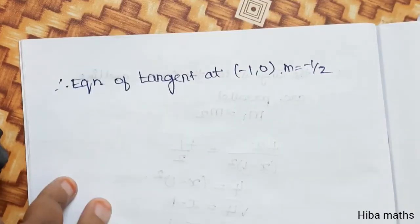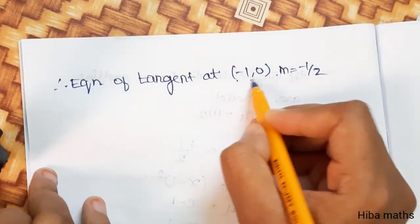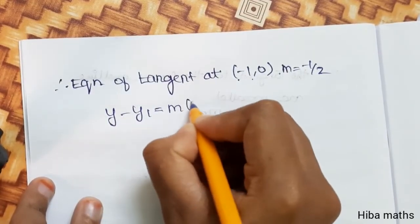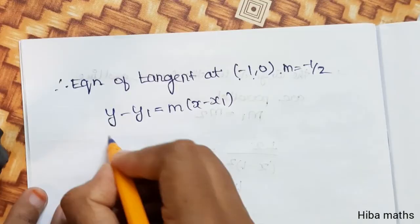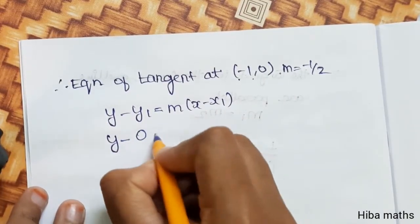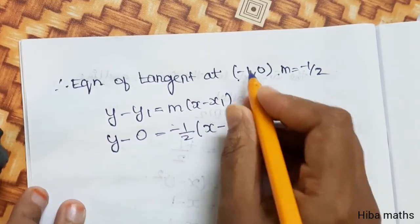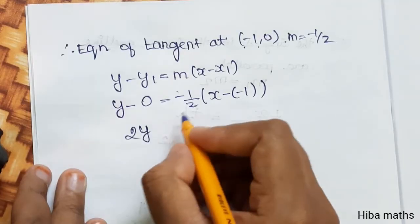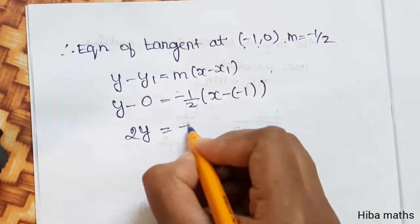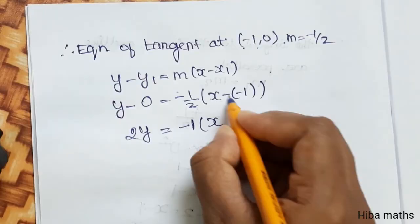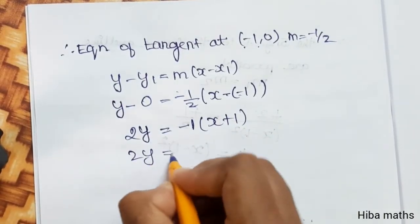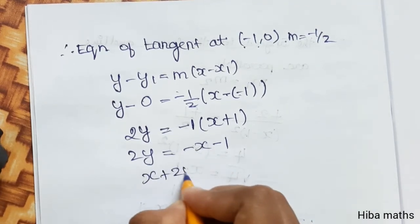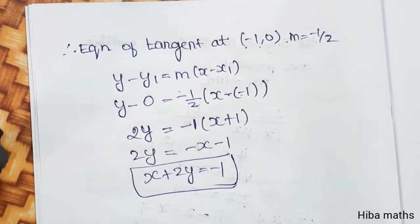At the point (−1, 0) with slope m equals −1/2, the equation of the tangent is y minus 0 equals −1/2 times (x minus of −1), so y equals −1/2 times (x plus 1). Multiplying by 2: 2y equals −x minus 1, giving x plus 2y equals −1. These are the two tangent equations.